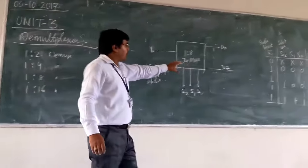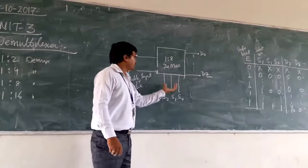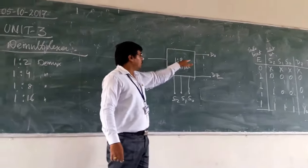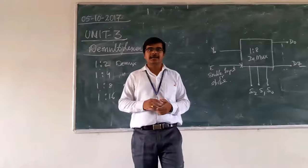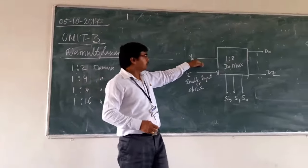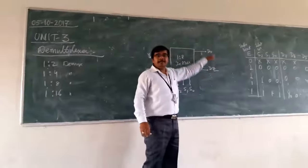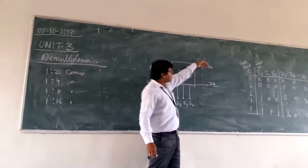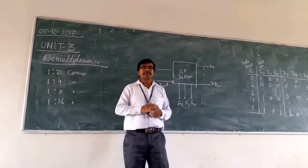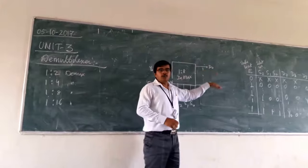If you are going for the logic diagram, this logic diagram is 1 is to 8 demultiplexer. Here, you are having 1 input and you are having 8 different outputs, that is your D0 to D7.